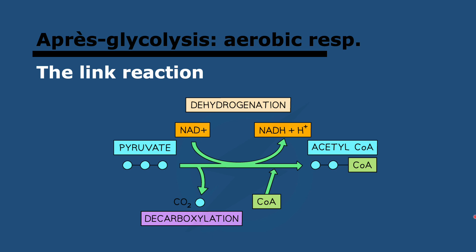What if we do have oxygen? In that case, pyruvate can be oxidized to carbon dioxide and water. The first step is called the link reaction, which links glycolysis to further steps in aerobic respiration. First, decarboxylation and then oxidation — CO2 is removed, and the product is called acetyl-CoA. It's very important to remember the name acetyl-CoA. This whole process happens in the matrix of the mitochondria — remember, glycolysis is in the cytoplasm, but the link reaction is in the matrix of the mitochondria.